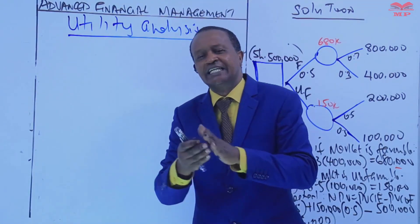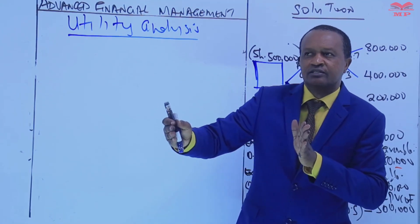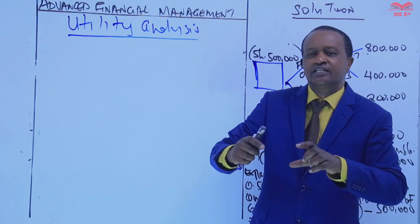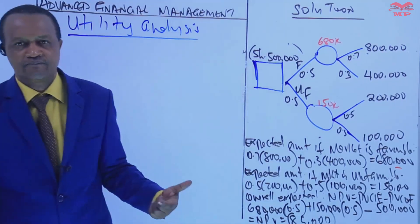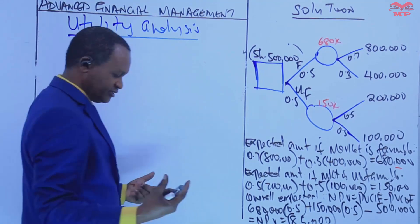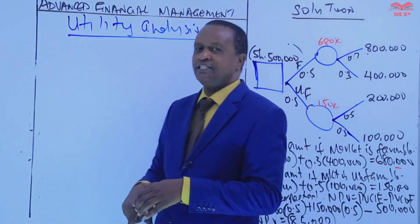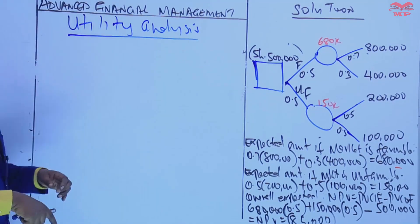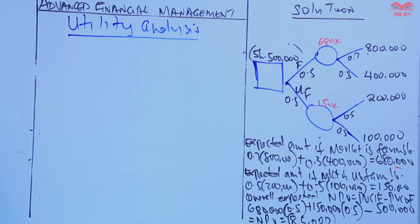Utility analysis assigns numerical scores or weights to each criterion, reflecting their relative importance, and then we evaluate how well each option satisfies those criteria. In summary, utility analysis is a technique in capital budgeting that we use to quantify variables that cannot be measured in monetary terms.